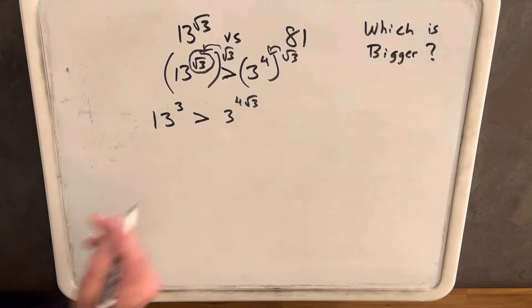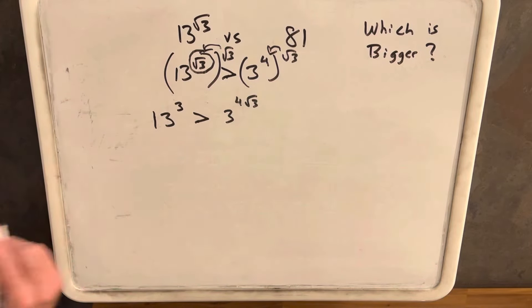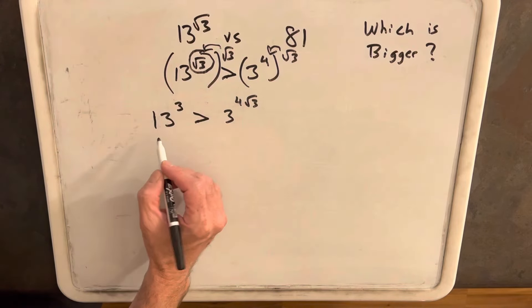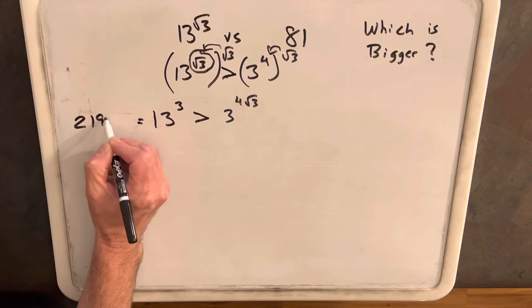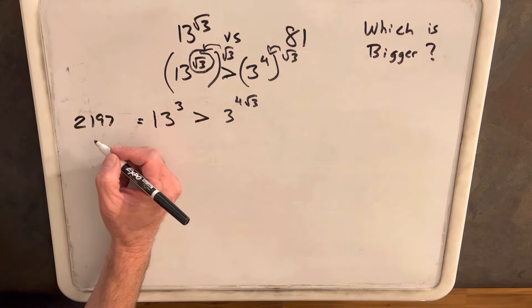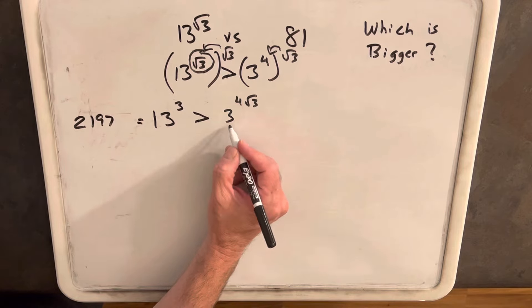Now, this is a little more similar to other which is bigger problems with exponents, where we're usually looking to compare like a power of each. We know 13 cubed is 2,197, so we should be looking for a power of 3 that's close to that.